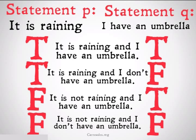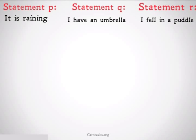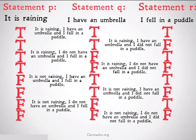Finally, if you have three different statements, you would have eight different possibilities; with four, you would have 16, and so on and so forth. Listing out these truth tables is how we're going to understand the logical operations that make up the work of propositional logic.